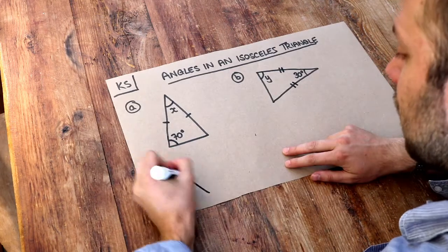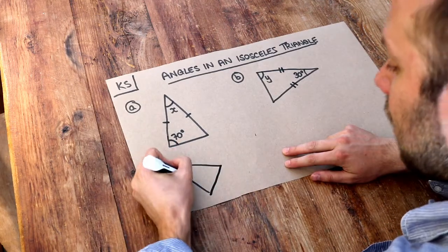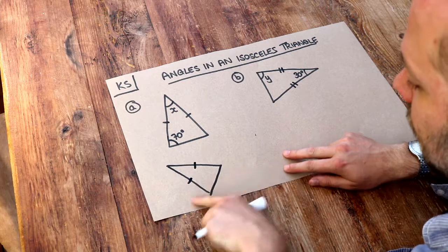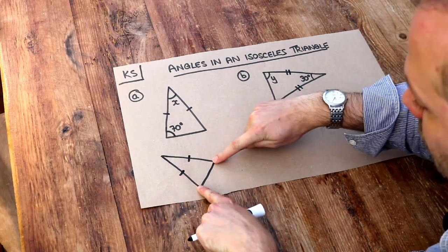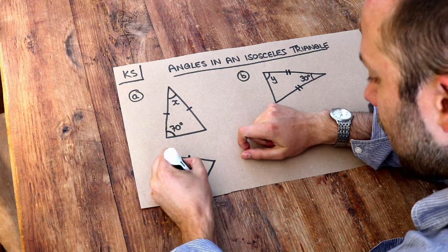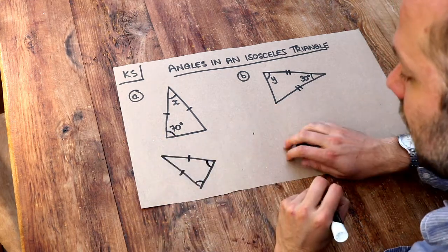Now the key thing with an isosceles triangle is that if you have two lengths the same, then if you follow your fingers away from each other to these two angles here, these angles are going to be the same.